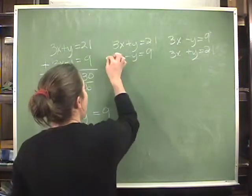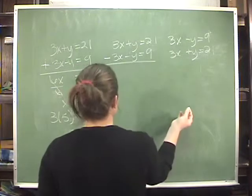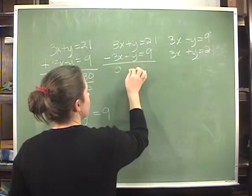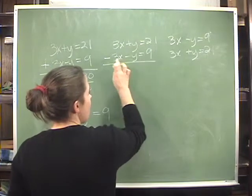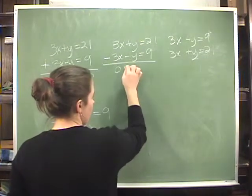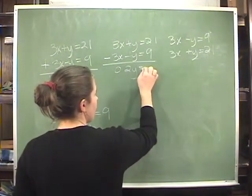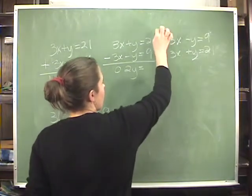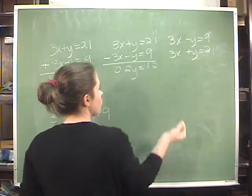Now, let's look at the second one. Let's solve it by subtraction. 3x minus 3x is 0, y minus a minus y is plus y, so that's 2y, equals 21 minus 9, which is 12.